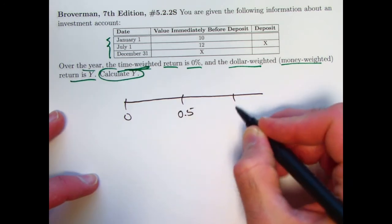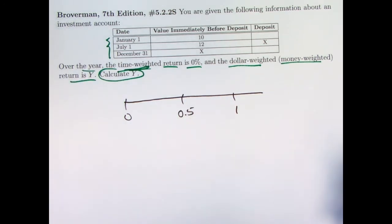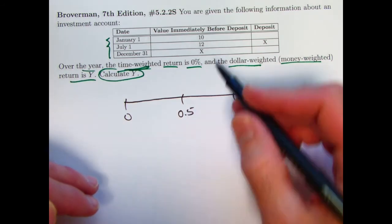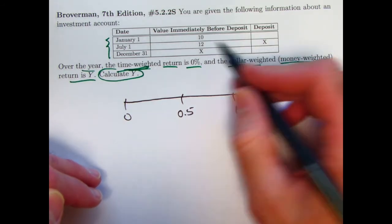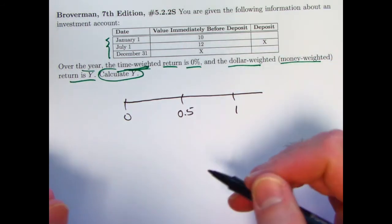And marking off time in years, but really, especially for the time-weighted rate of return, the actual times themselves don't matter, which is why the time-weighted rate of return is kind of a misnomer. It's kind of misnamed and confusing because of that. It really doesn't matter that this deposit is halfway through the year for the time-weighted rate of return.